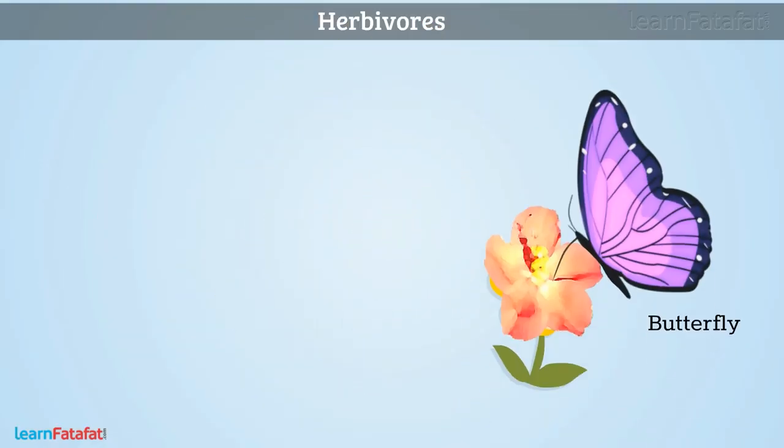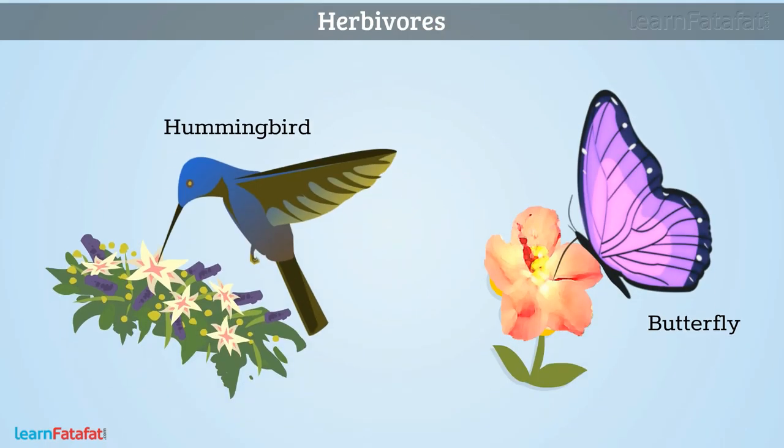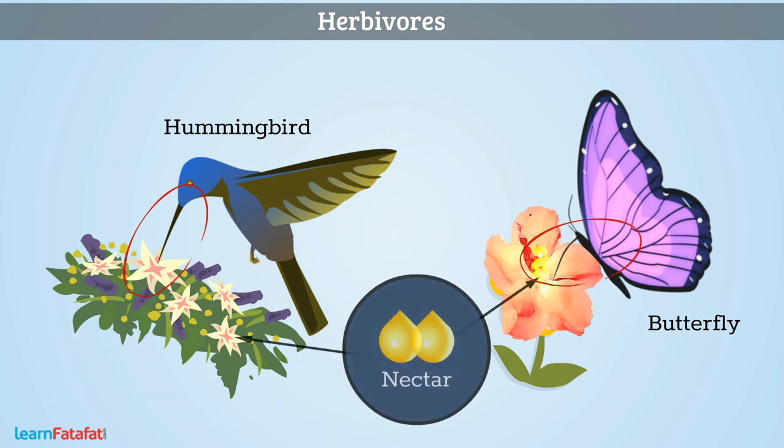Butterfly and Hummingbird have a straw-like shape with which they suck the sweet juice called nectar from the flowers.